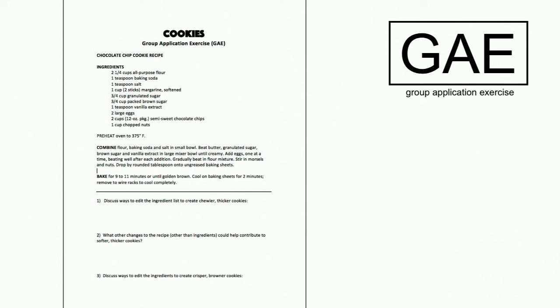Group two, can you read and answer question two? They said: higher temperature for less time. Perfect - cook at a higher temperature for less time. Group three, answer question three: to make crisper, browner cookies, add more flour and change the ratio to increase the amount of white sugar.